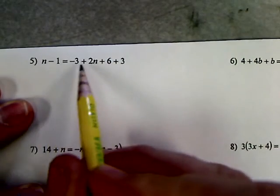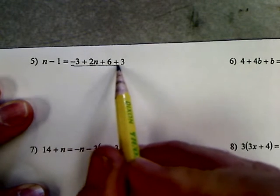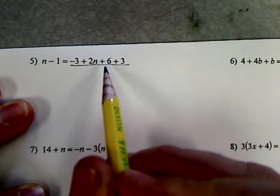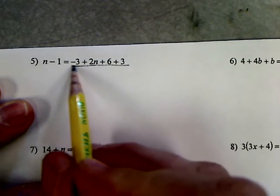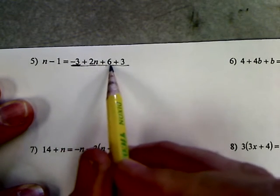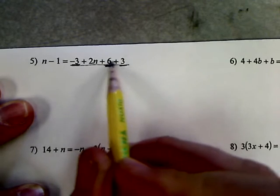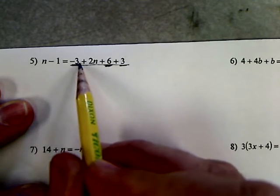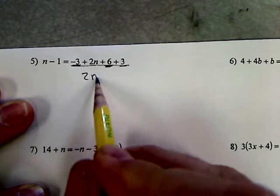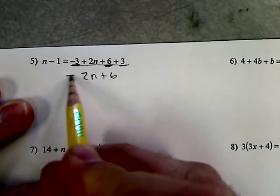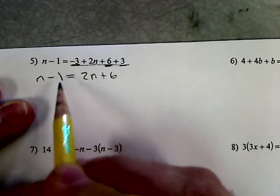Okay, first thing you want to do is combine like terms on the same side of the equal sign. So I have a negative 3, a 6, and a 3. So 9 minus 3 is 6. So I have 2n plus 6 equals n minus 1.